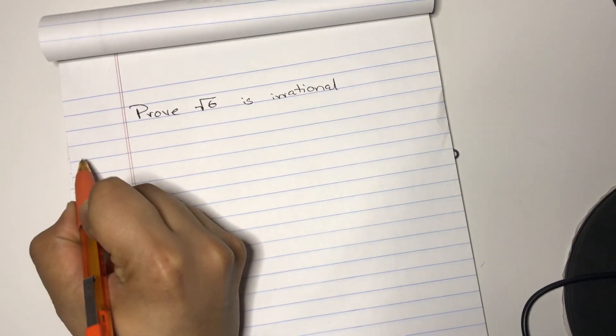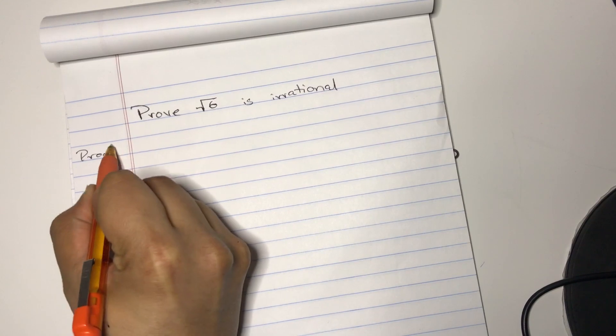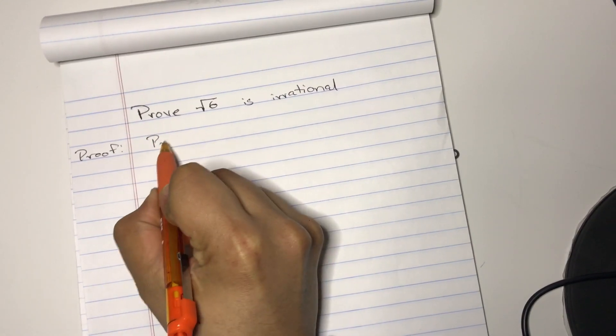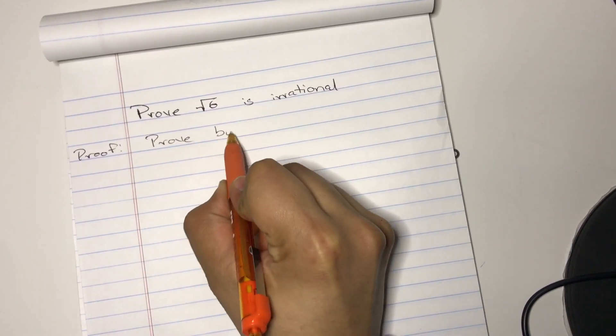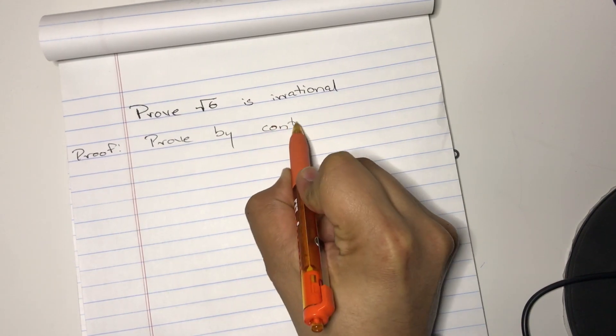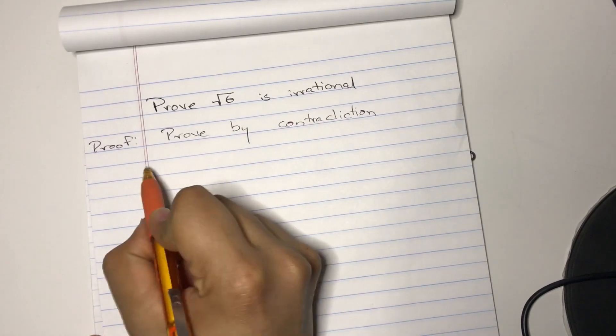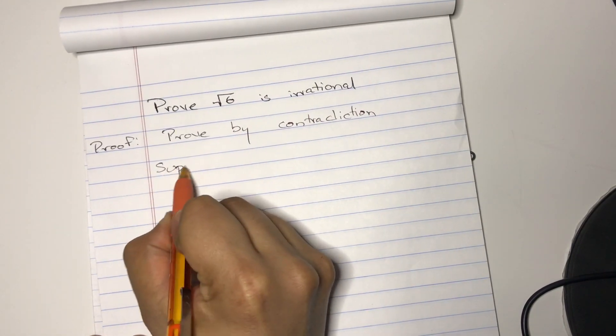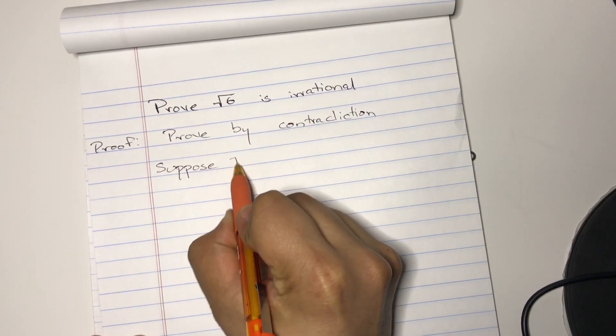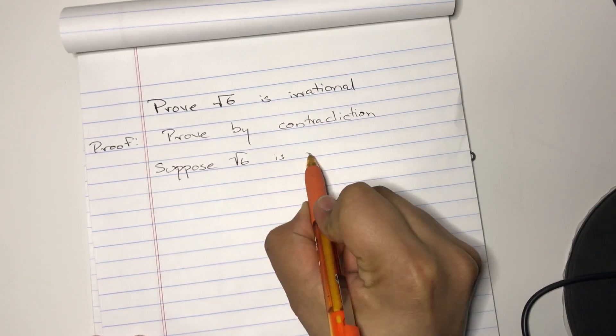Proof. We're going to prove by contradiction. Okay, so we're going to suppose the square root of 6 is rational.